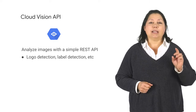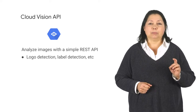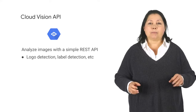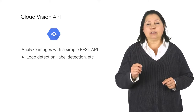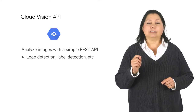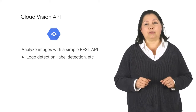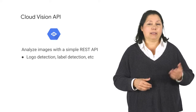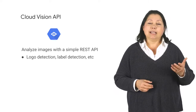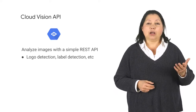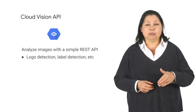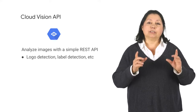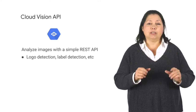The Cloud Vision API enables developers to understand the content of an image. It quickly classifies images into thousands of categories — sailboat, lion, Eiffel Tower — detects individual objects within images, and finds and reads printed words contained within images.